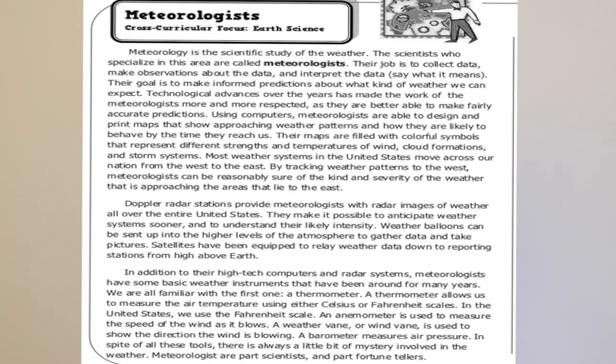Let's get started. Meteorology is the scientific study of the weather. The scientists who specialize in this area are called meteorologists. Their job is to collect data, make observations about the data, and interpret the data — say what it means. Their goal is to make informed predictions about what kind of weather we can expect. Technological advances over the years have made the work of meteorologists more and more respected, as they are better able to make fairly accurate predictions. Using computers, meteorologists are able to design and print maps that show approaching weather patterns and how they are likely to behave by the time they reach us. Their maps are filled with colorful symbols that represent different strengths and temperatures of wind, cloud formations, and storm systems.